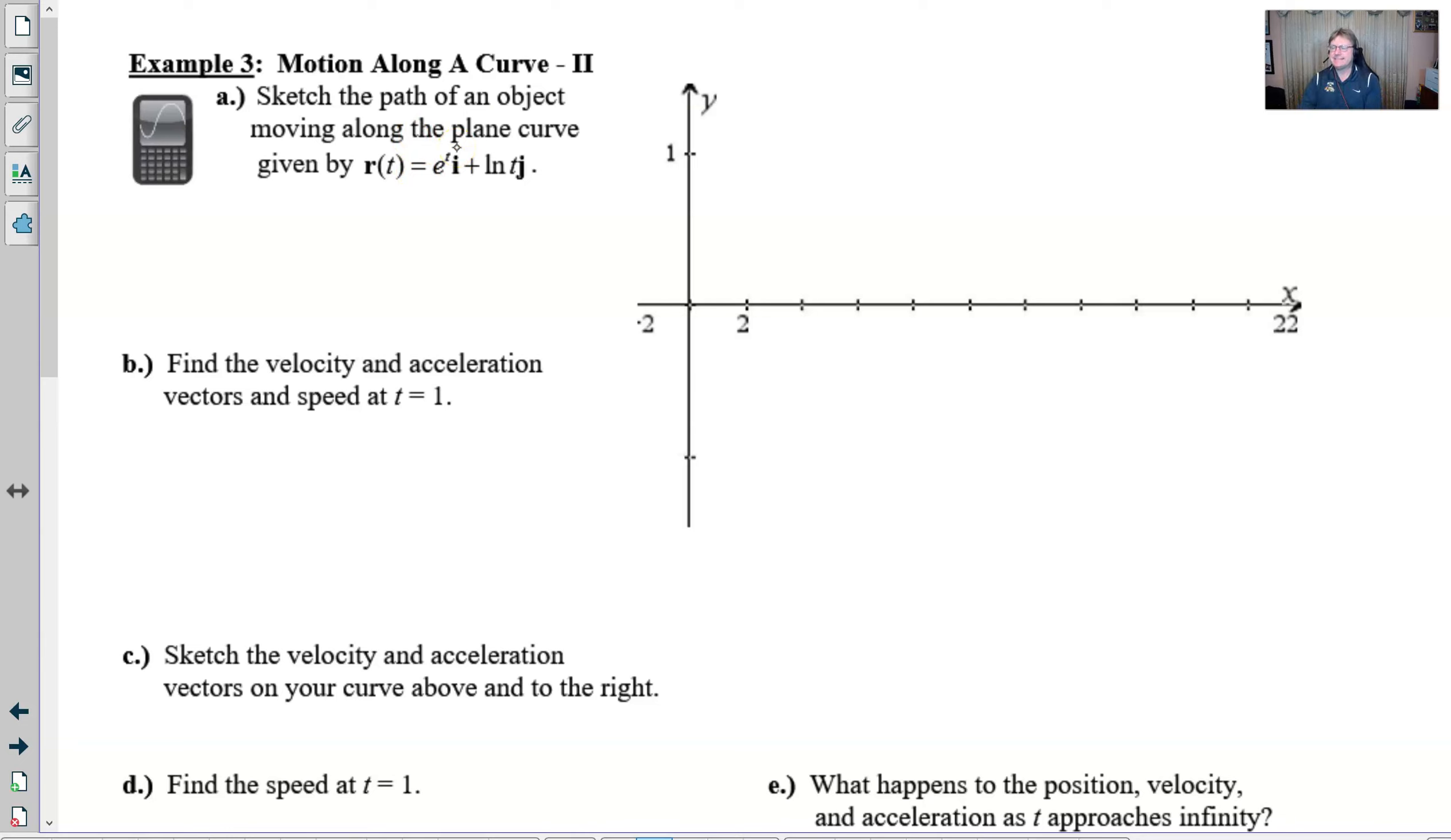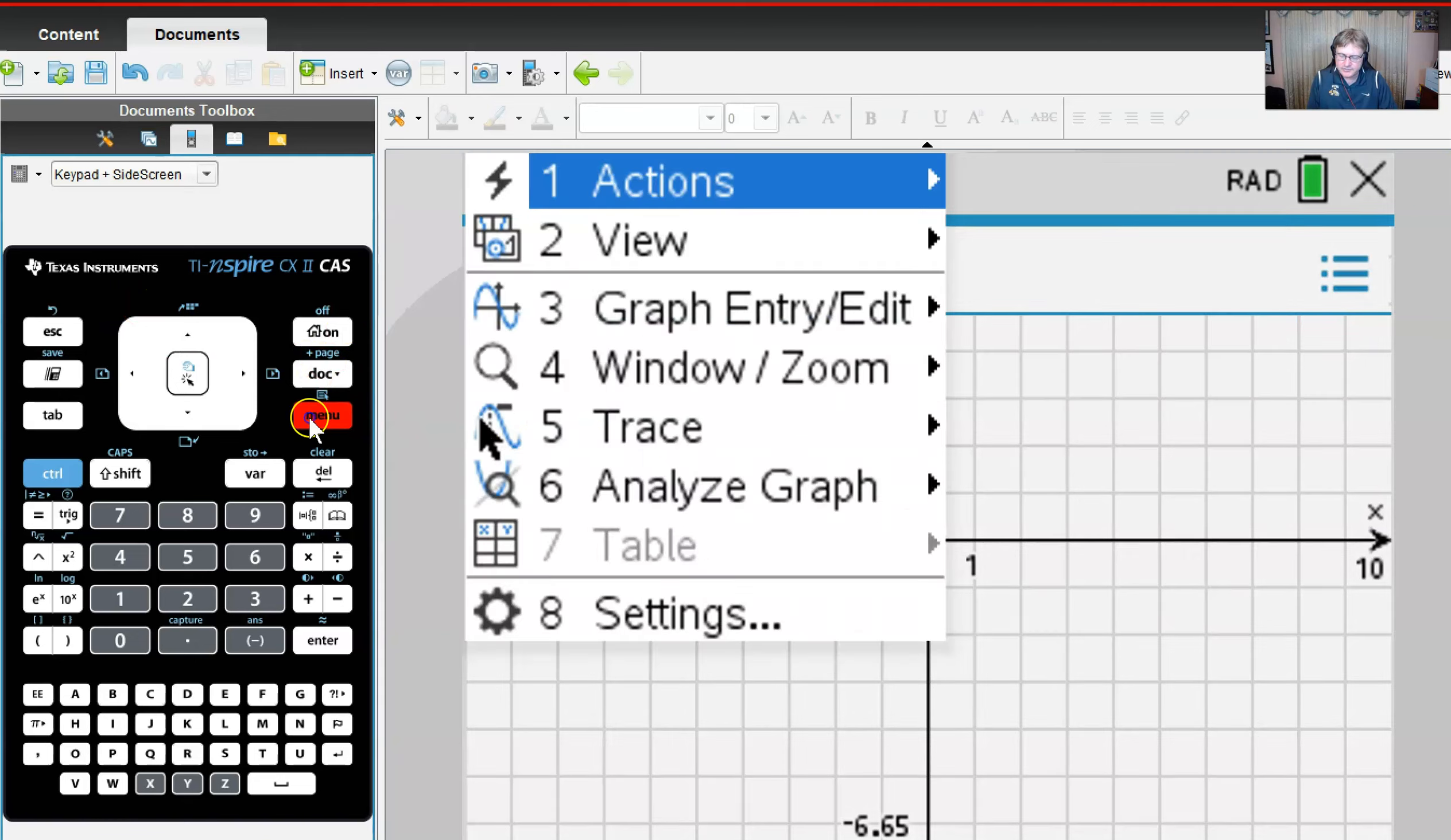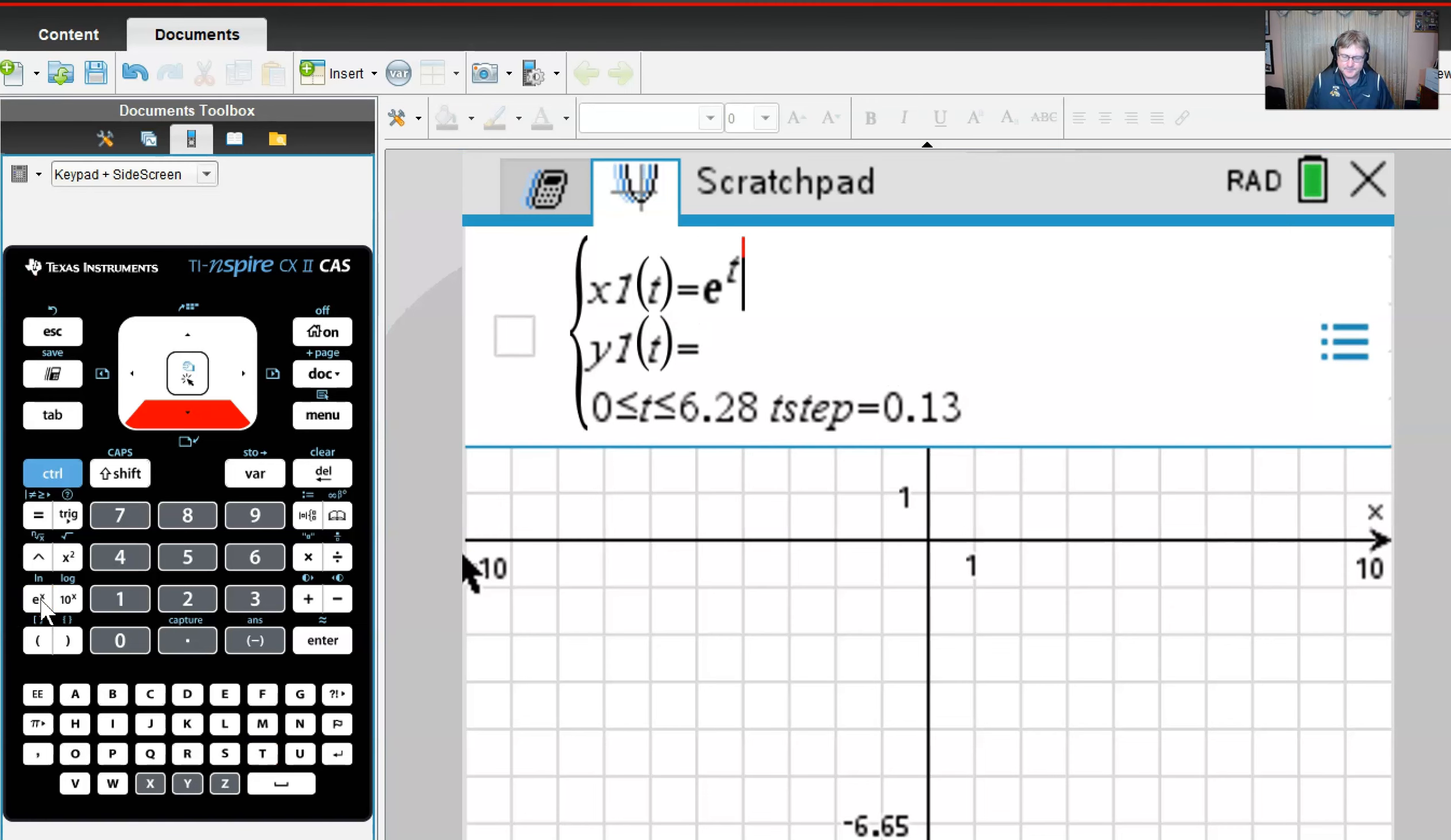Perhaps there is a clever way that one might fashion a rectangular equation for this, but I'm content with using a bit of technology. The first thing we're going to do is call up our graphing calculator and make sure we're in parametric graph entry mode. I'm going to input e to the t and natural log of t as my x and y components.